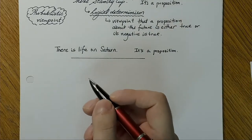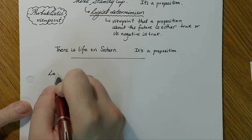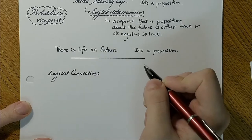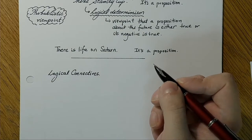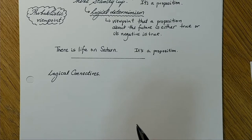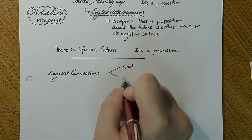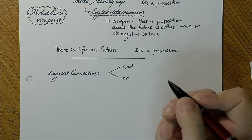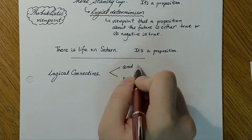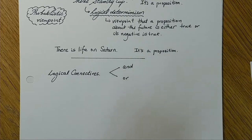Now that we have that out of the way, we can start to look at logical connectives. What these things do is they connect propositions together. We have lots of different words we can use — things like 'and' and 'or'. When we start combining propositions together, we have compound propositions, and we can look at what those truth values would correspond to.